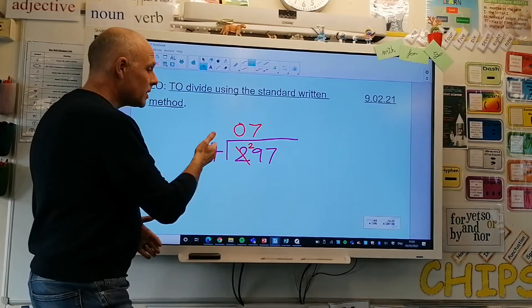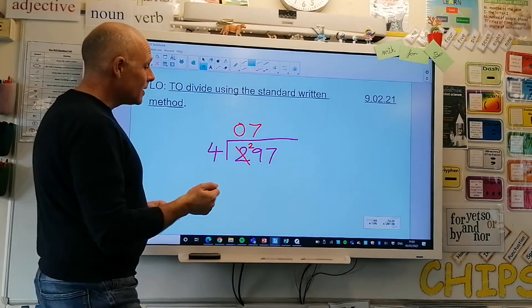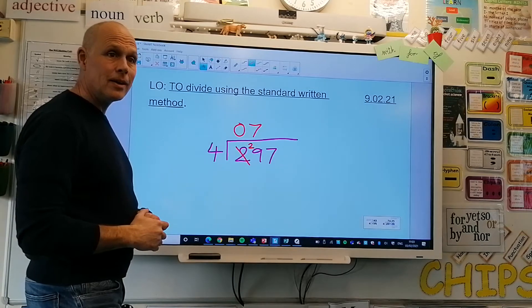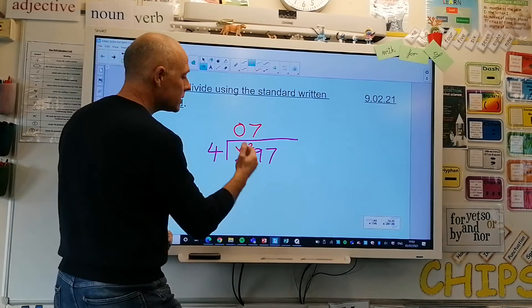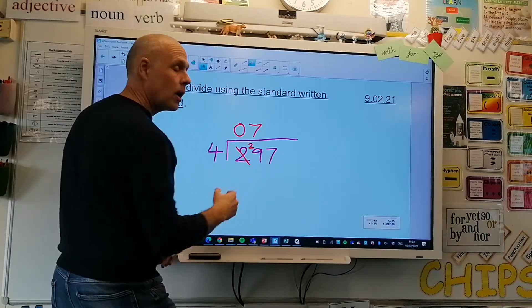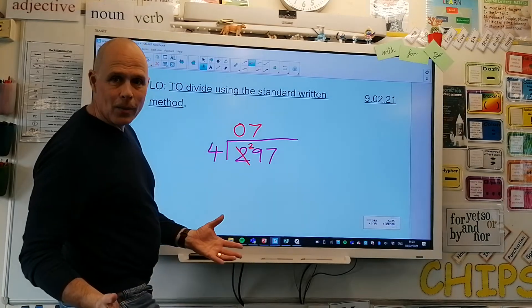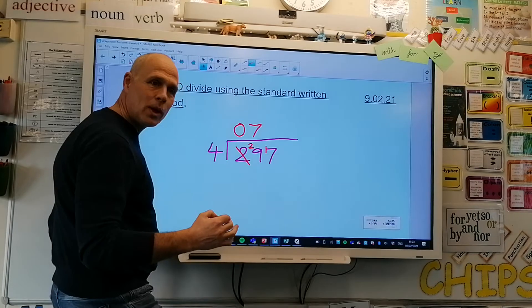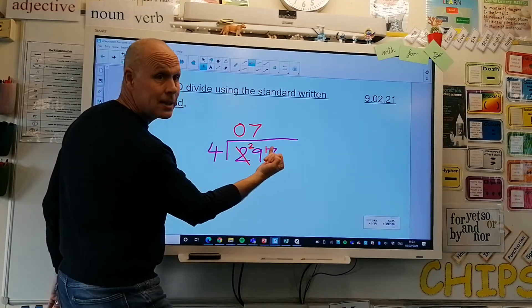Okay, 7 times 4 is 28, so that means I've got how many left over from my 29? Olivia, okay great. So I'm going to put that 1, I'm going to put that 1, I'm not going to put it anywhere, I'm exchanging it. I'm exchanging that 1 ten for 10 ones, therefore I've gone from 7 to 17 ones.